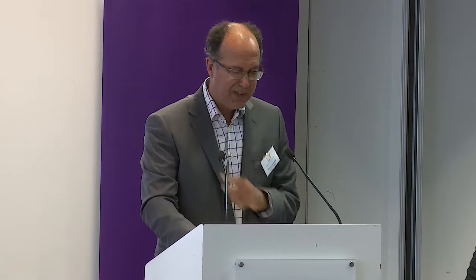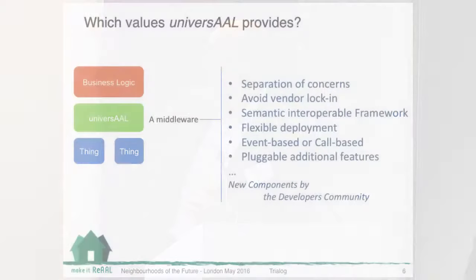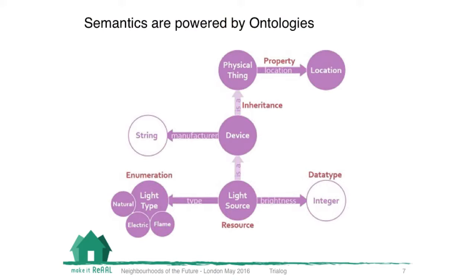So, just quickly, some technical things about Universal. Universal is a middleware — middleware means that you have applications on top, and things on the bottom. Universal sits between these layers to make a separation of concern, meaning your application is independent from the things. You can change, modify, or buy new things compatible with your applications. If you have questions on technical aspects, Alvaro — the developer-in-chief of Universal — is here. He knows perfectly well the technical aspects.